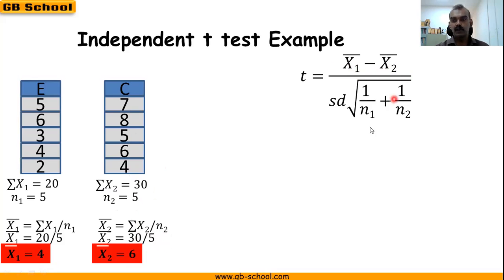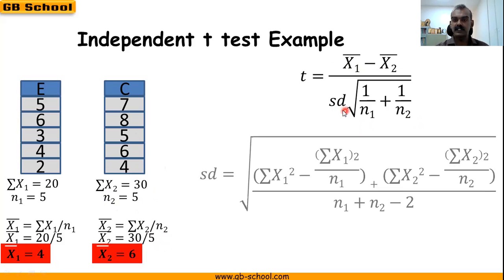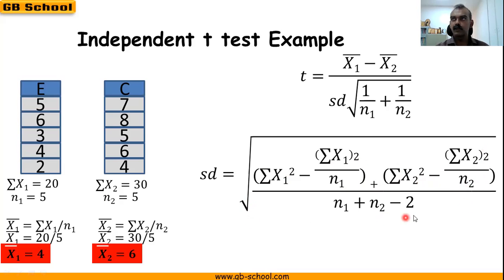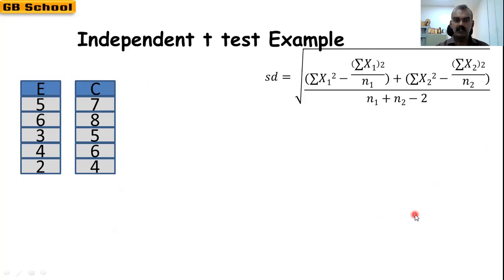Next we have to find the standard deviation of the difference. The formula is: √[(Σx₁² − (Σx₁)²/n₁ + Σx₂² − (Σx₂)²/n₂) / (n₁ + n₂ − 2)]. What we need first is the sum of x₁ squared.